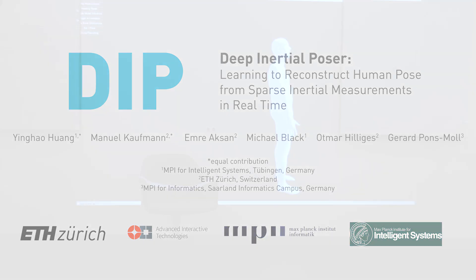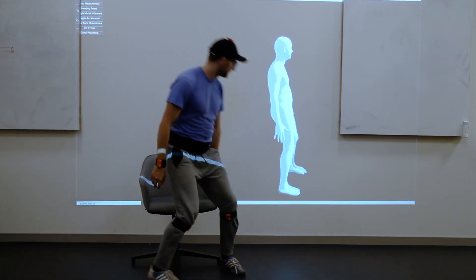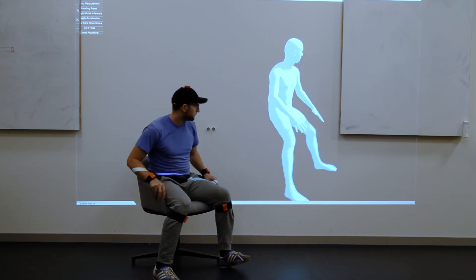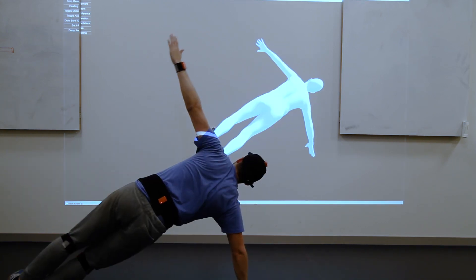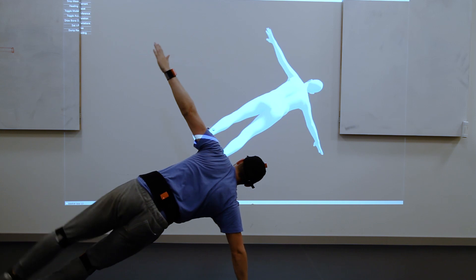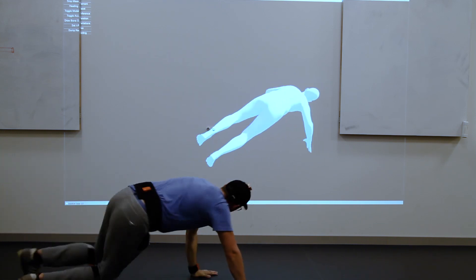In this paper we propose Deep Inertial Poser, a novel deep learning based approach capable of reconstructing full human body pose from just six IMUs worn on the user's body in real time.